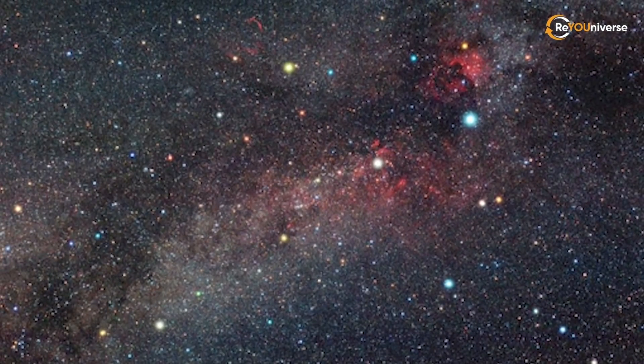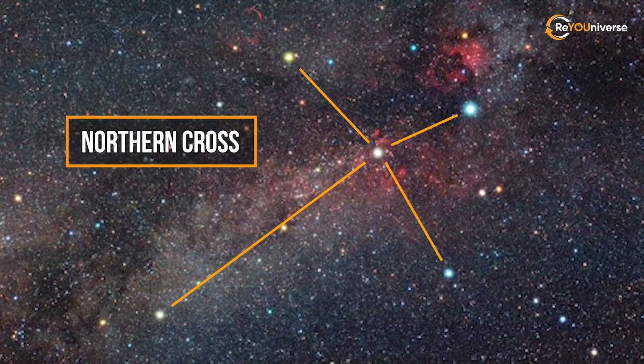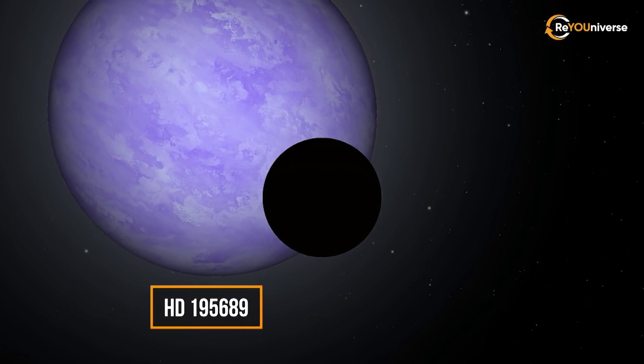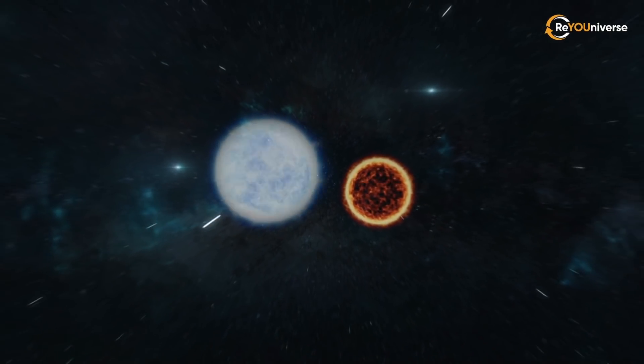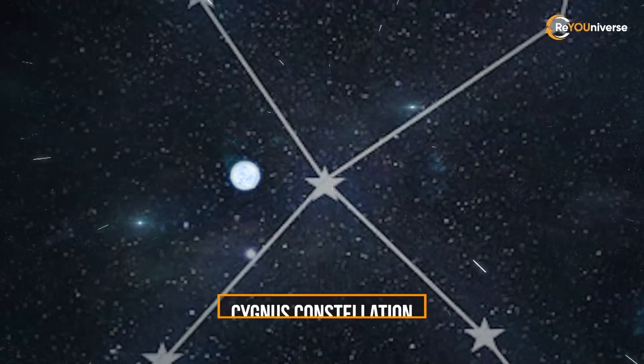The planet is close to Seder, a bright star in the center of the Northern Cross. It orbits a star called KELT-9, or HD195689, about 620 light-years away from the Sun in the Cygnus constellation.